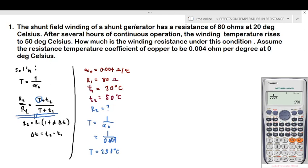So we have now our T. We can solve now for R2 by using this formula. Let's try another color of pen. So R2 over R1 is equal to T plus T2 over T plus T1. So let's substitute. R2 is not given, that is the required. Our R1 is 80 ohms.